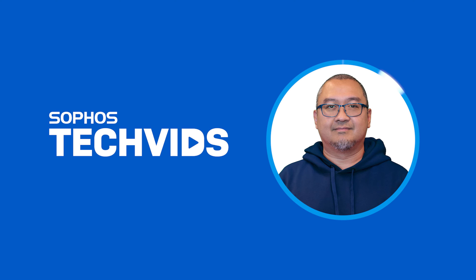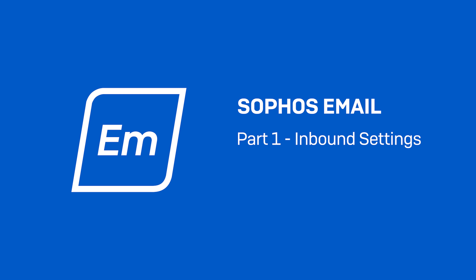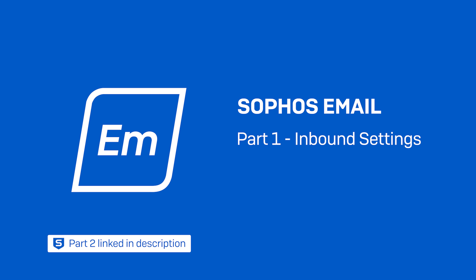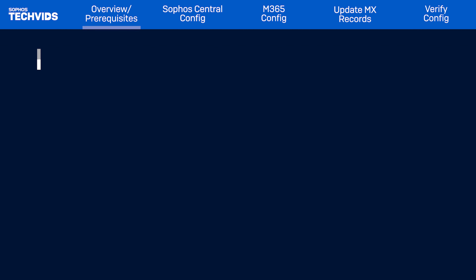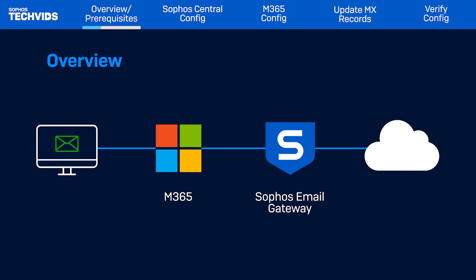Hi, I'm Jose from Sophos Support and I'll be showing you how to configure Sophos Email External Dependencies for Microsoft 365. This is a two-part series. In this part, I'll focus on the configuration of inbound settings. In the next part, I'll walk you through the outbound configuration and this video is linked in the description. Sophos Email Gateway can be integrated with external mail clients to send and receive messages on their behalf. A number of mail clients can be integrated with Sophos Email, but I'll be focusing on Microsoft 365.